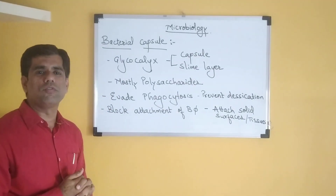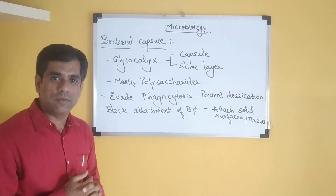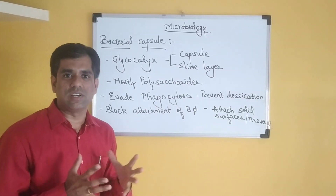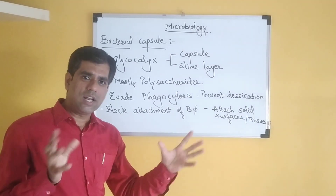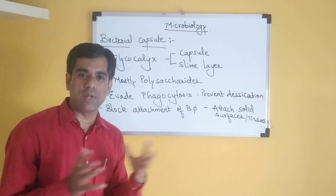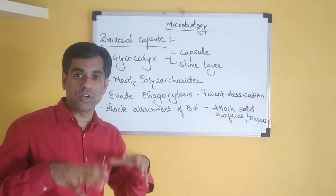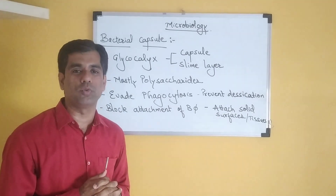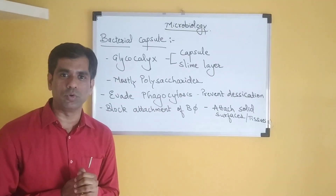Certain slime layers are also important in gliding motility. If a particular capsule is made of a charged molecule like sugar uronic acid, all capsules will have a similar kind of charge and the cells will repel each other. Therefore, the stability of the suspension — preventing the cells from aggregating together — is also a function performed by these capsules.